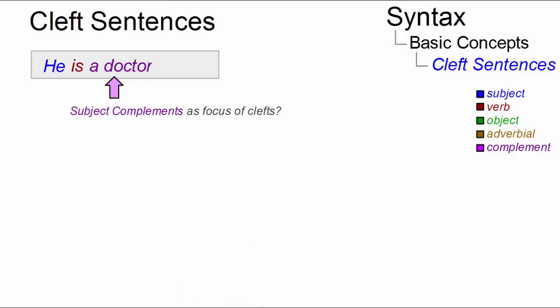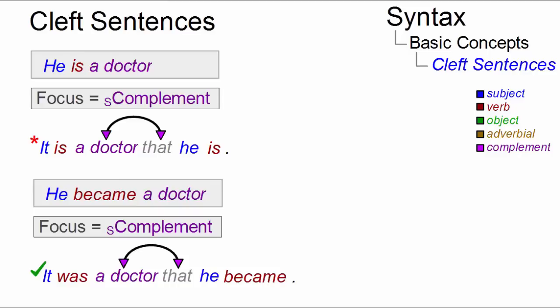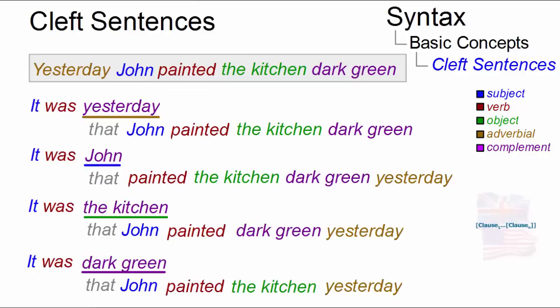Subject complements as the focus of clefts are more restricted, especially with a form of 'be' at the end of the subordinate clause. 'It is a doctor that he is' is ungrammatical. But without these restrictions they work — 'It was a doctor that he became' works. So cleft sentences are flexible devices to highlight different parts of sentences in present-day English.